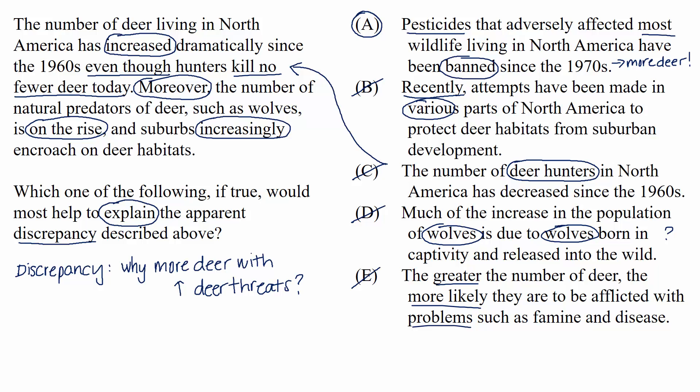To recap: for explain questions, you're reading with the purpose of formulating the discrepancy, and it's really helpful to form a question around it if you can. Why are there more deer today even though so many threats to deer have increased? Then pretend that each choice is a proposed answer to that question and pick the one that actually does answer the question and shed light on the situation.